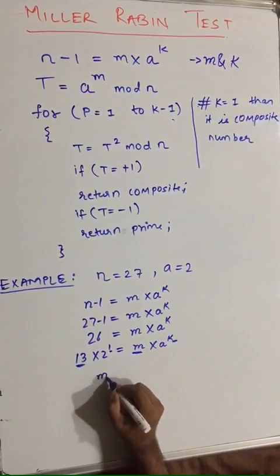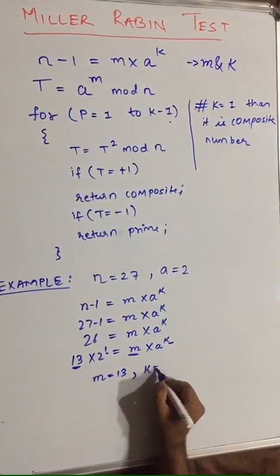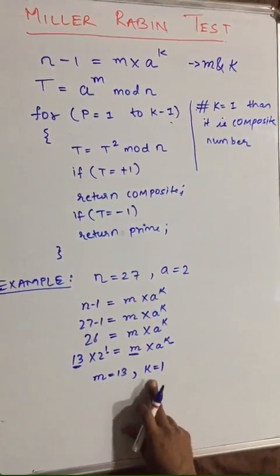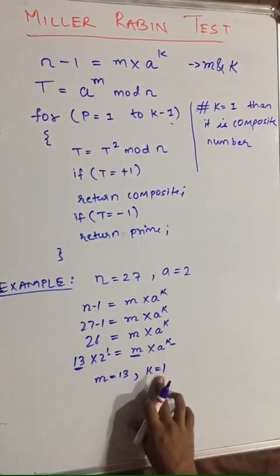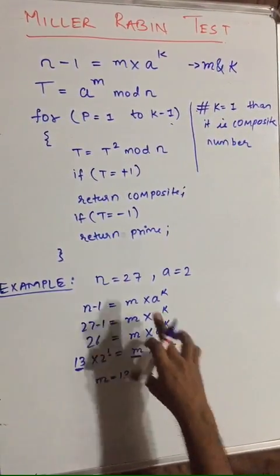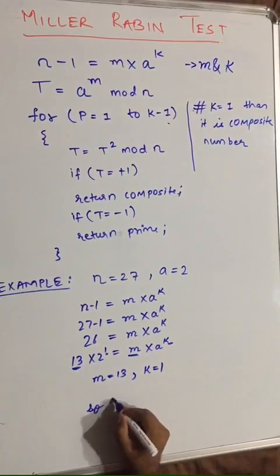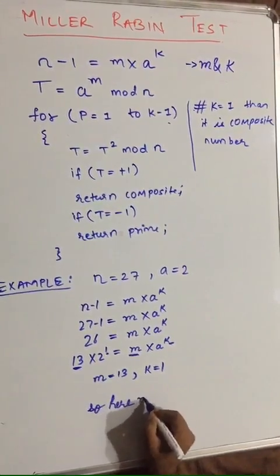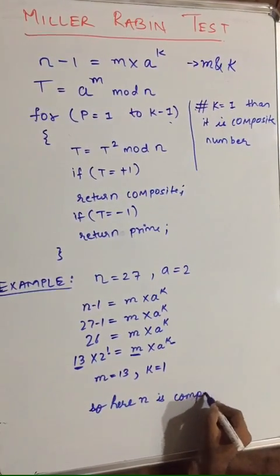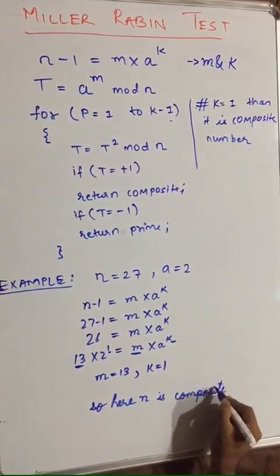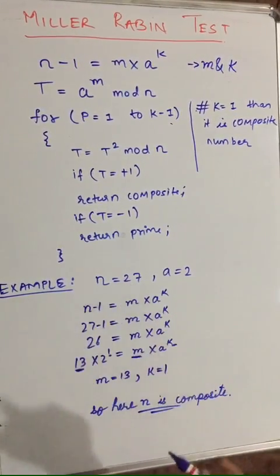So m is equal to 13 and k is equal to 1. As I told you, whenever you get k equal to 1 you can directly say the given number is composite. Here n is composite, which we can clearly see because 27 is a composite number.